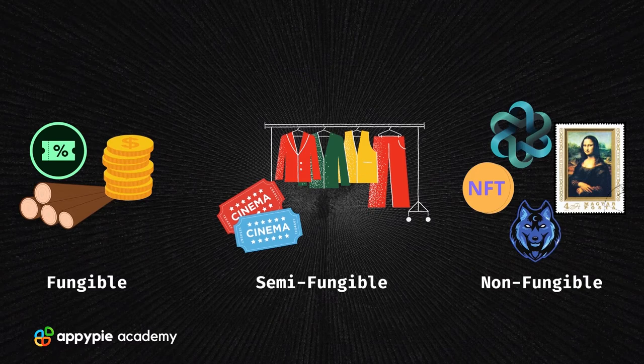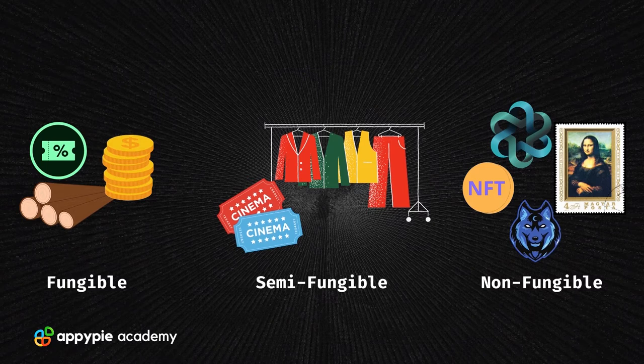You can see in this image: for the fungible item there are things like wood, coupons, and currency like the dollar. For semi-fungible items there are clothes and cinema tickets. On the non-fungible side you can see artwork like the Mona Lisa, some game icons, stickers, and things like that — these are non-fungible tokens.